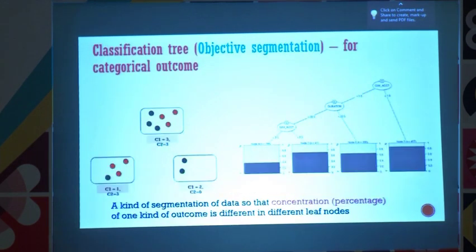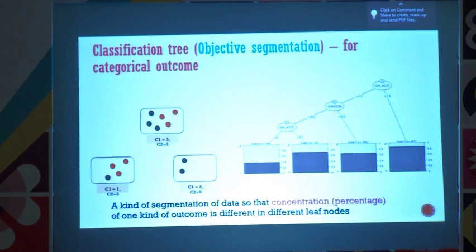It is a kind of segmentation where the concentration or percentage of one kind of outcome — zero or one — is different in different nodes: much less in some, much more in others. That's why you can operate on it. What you did in the example is create this kind of grouping so that your response rate went from 1% to 4.5%. Now one thing comes: when you talk to business and show this kind of result, next time they will say — give me exactly those 900 who will respond.